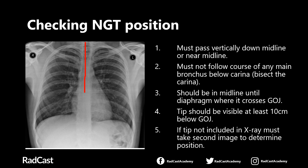Point three is that the nasogastric tube should continue in the midline until it reaches the diaphragm where the gastroesophageal junction is, continuing down the oesophagus to the point where it turns into the stomach. Here, the nasogastric tube will usually deviate to the left, and the tip will be located somewhere in the left upper quadrant within the stomach. You want the tip to be located at least 10 centimetres beyond the gastroesophageal junction at the diaphragm, so that any food and medication given to the patient will be dumped nicely into the stomach and won't be regurgitated back up.